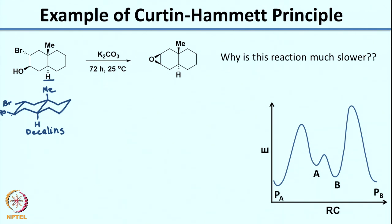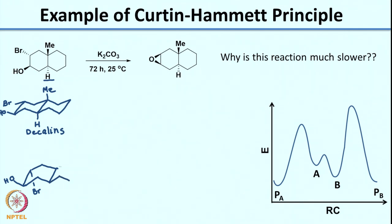You cannot go easily from the di-equatorial to the di-axial orientation. Now, if you need to do the epoxidation reaction, the molecule needs to undergo some change so that you can get anti-periplanar orientation. In order to get the OH and Br anti-periplanar, let us try to draw it such that there is a small change in the conformation. There is not much change in the second ring, and what you see is a conformation which is sort of like a boat-like conformation, but it gets the anti-periplanar orientation between the OH and the Br.